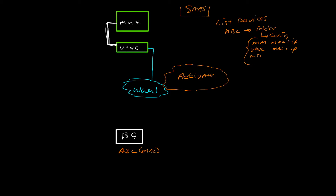The Mobility Master and VPNC have already been set up. What I knew was some information about the MAC addresses and IP addresses of the Mobility Master and VPNC. I also knew something about the branch gateway — specifically the MAC address — and what I do is tie them all together in the Activate account. It's important to also prepare the Mobility Master and VPNC for connectivity from the branch gateway.